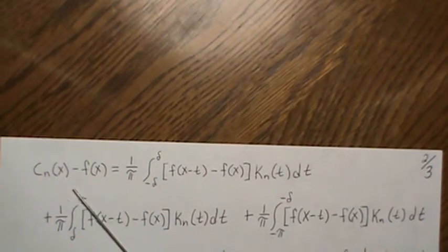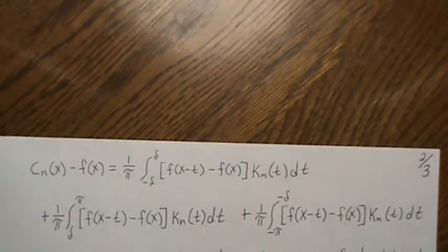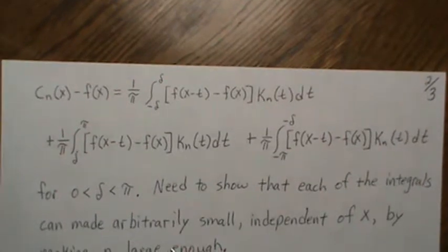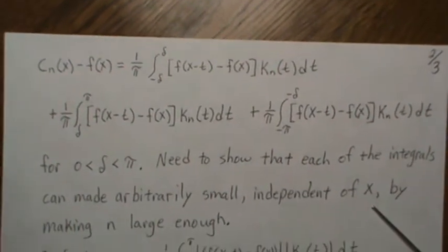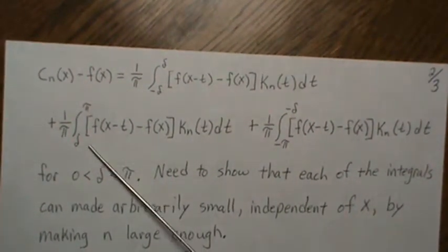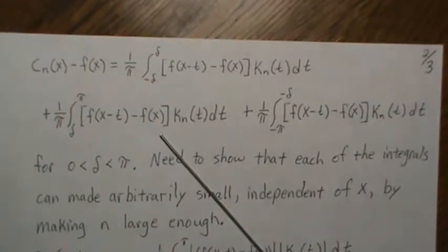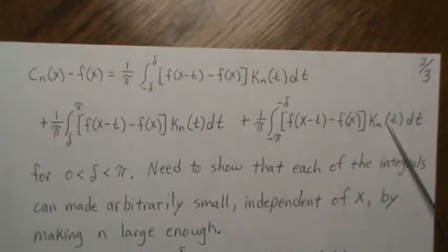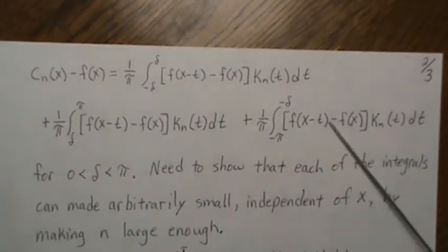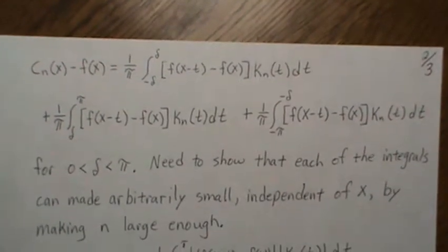Here are the three intervals. Delta is between 0 and π, and we need to show that each integral can be made arbitrarily small independent of x by making n large enough. We'll look at the δ-to-π integral, then note that the −π-to−δ integral is handled similarly, and then treat the middle interval separately.